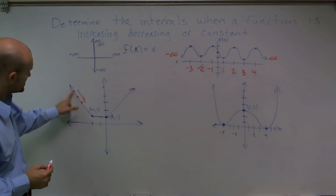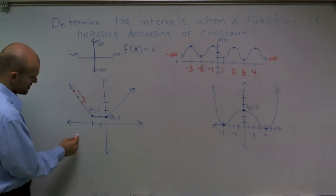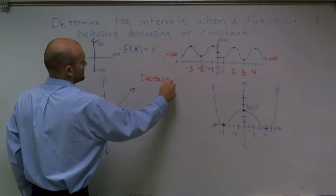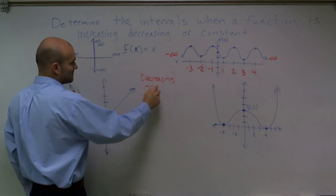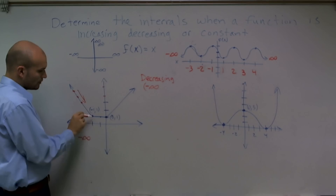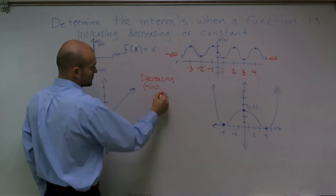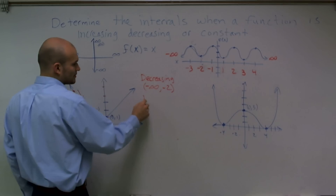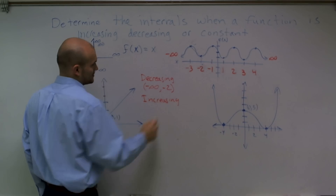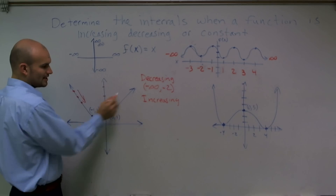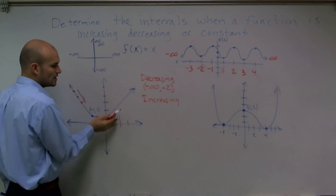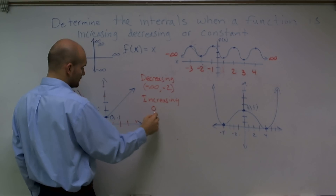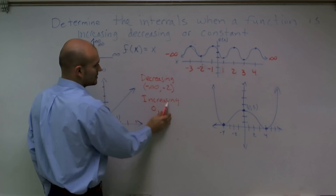On what interval is the graph decreasing? Well, this graph goes infinitely to the left, so my farthest point is negative infinity. The graph is decreasing from negative infinity all the way down to where it stops decreasing at negative 2. Then at no other point is my graph getting smaller. Let's look at when the graph is increasing — when the output values are increasing. As my x values go to the right, you can see the graph is going up towards positive infinity. Therefore, it's increasing on an interval of 0 to infinity.